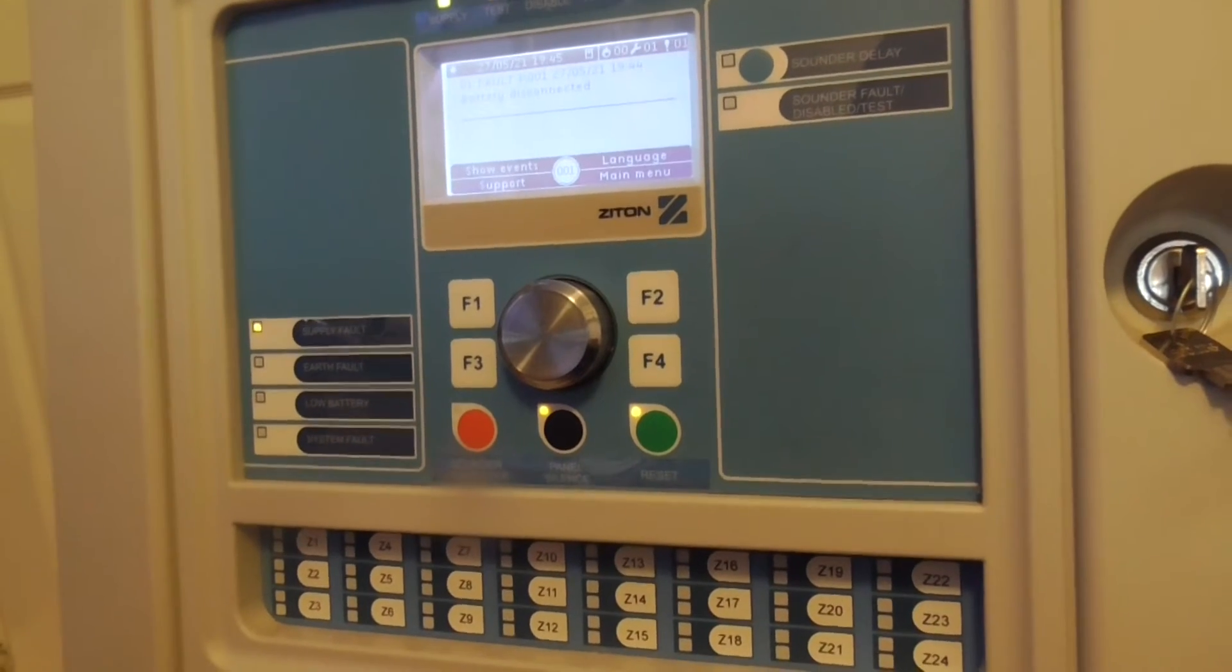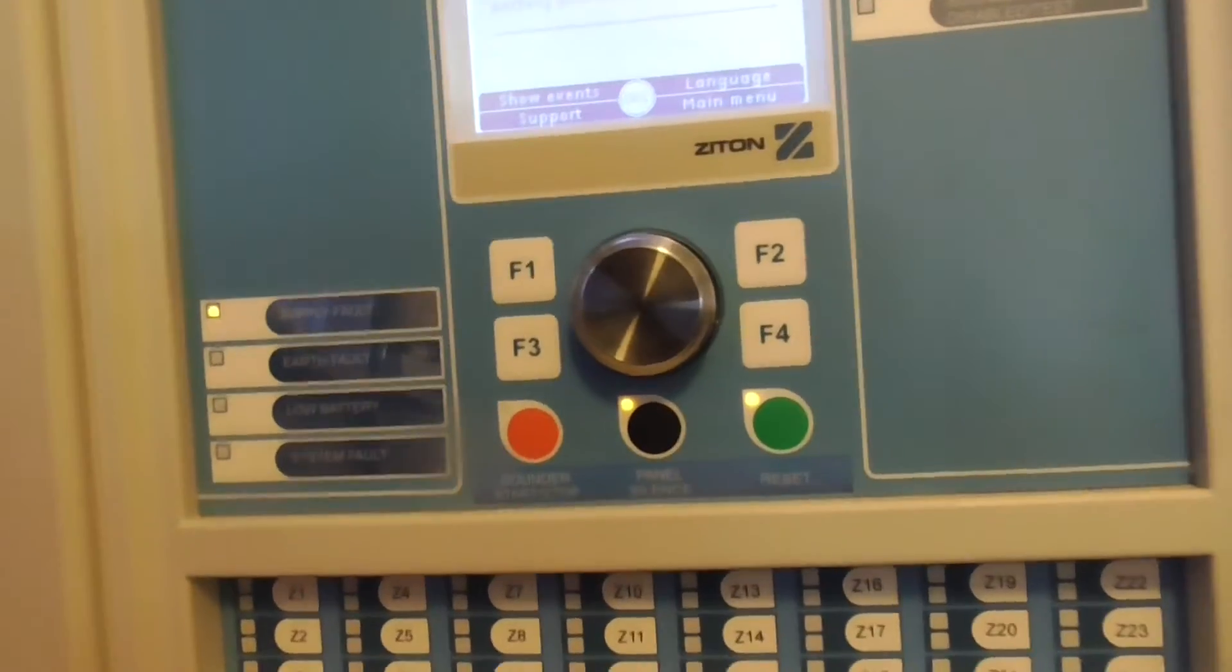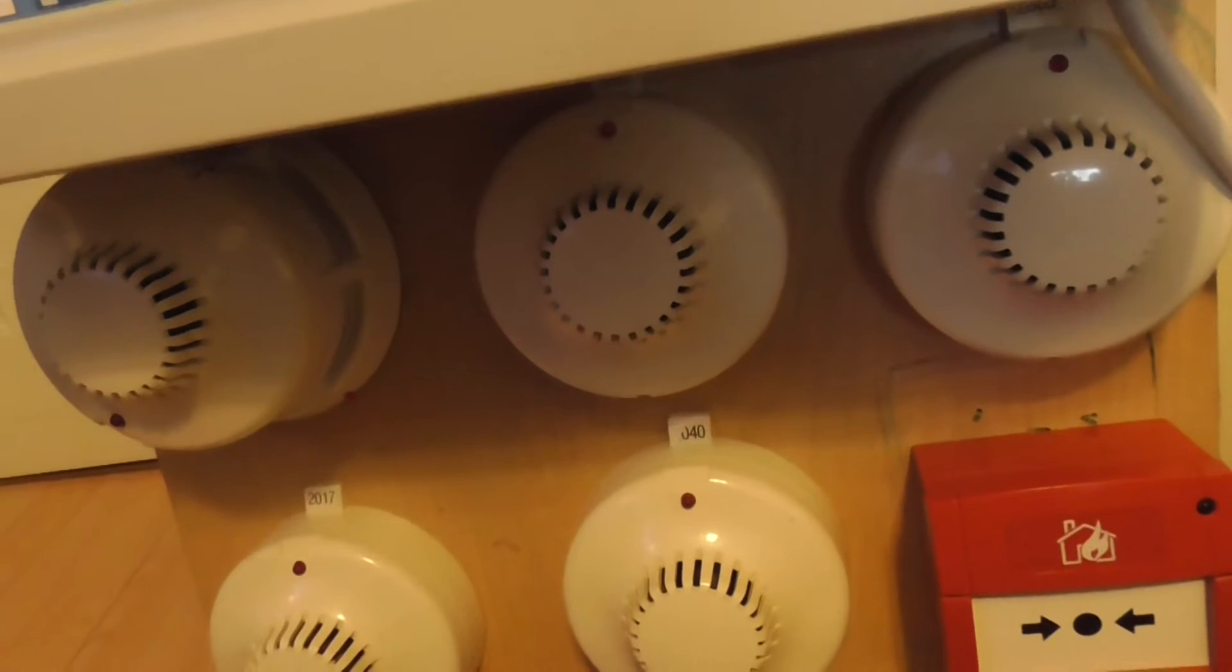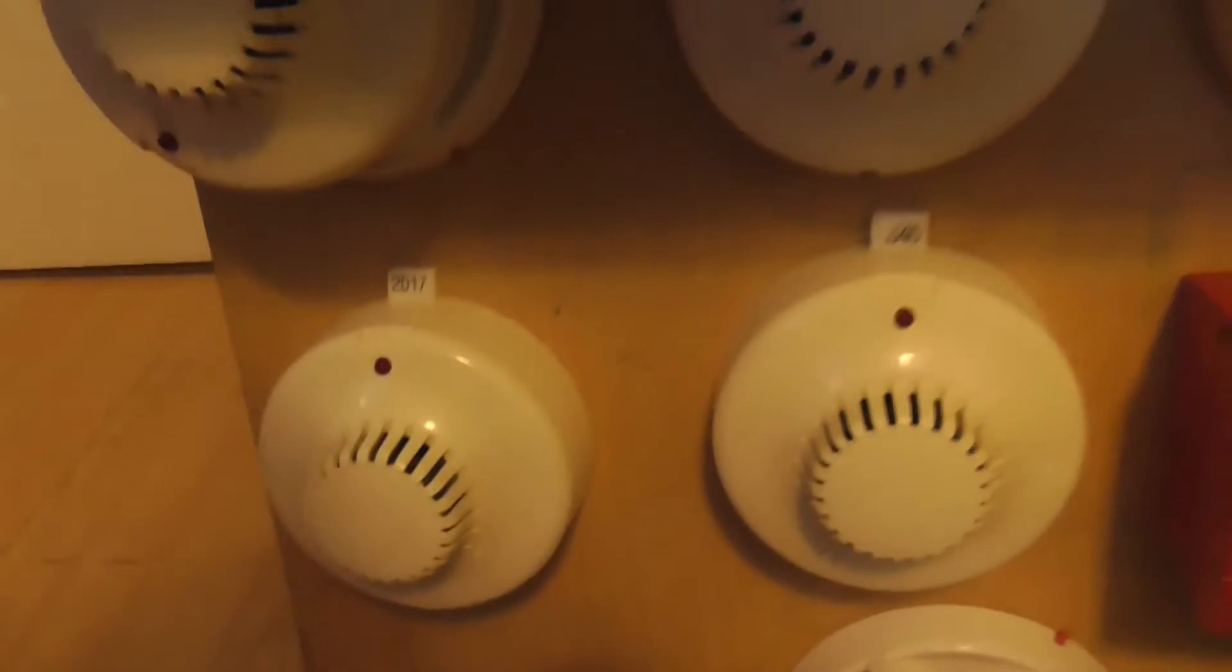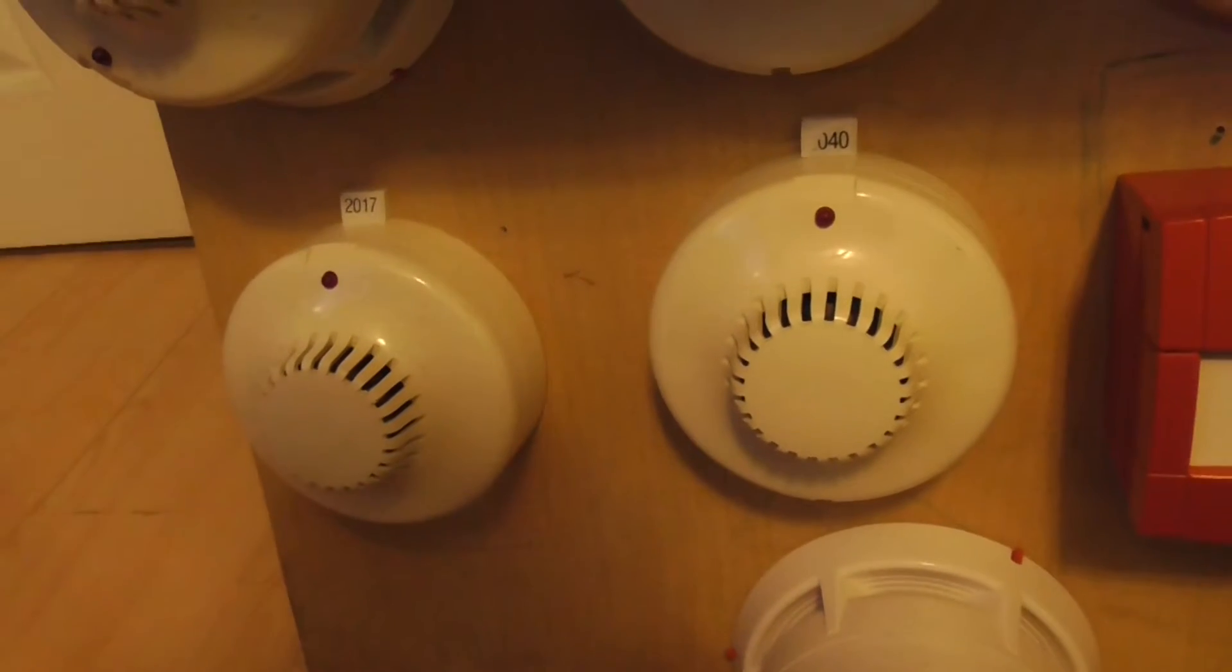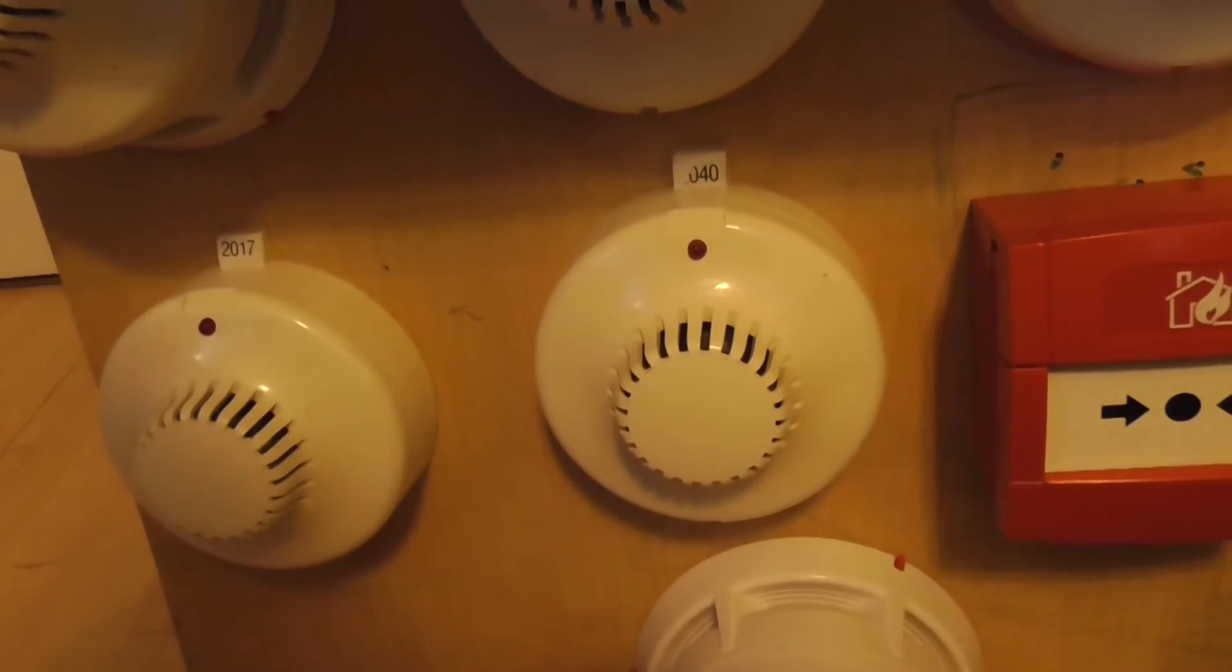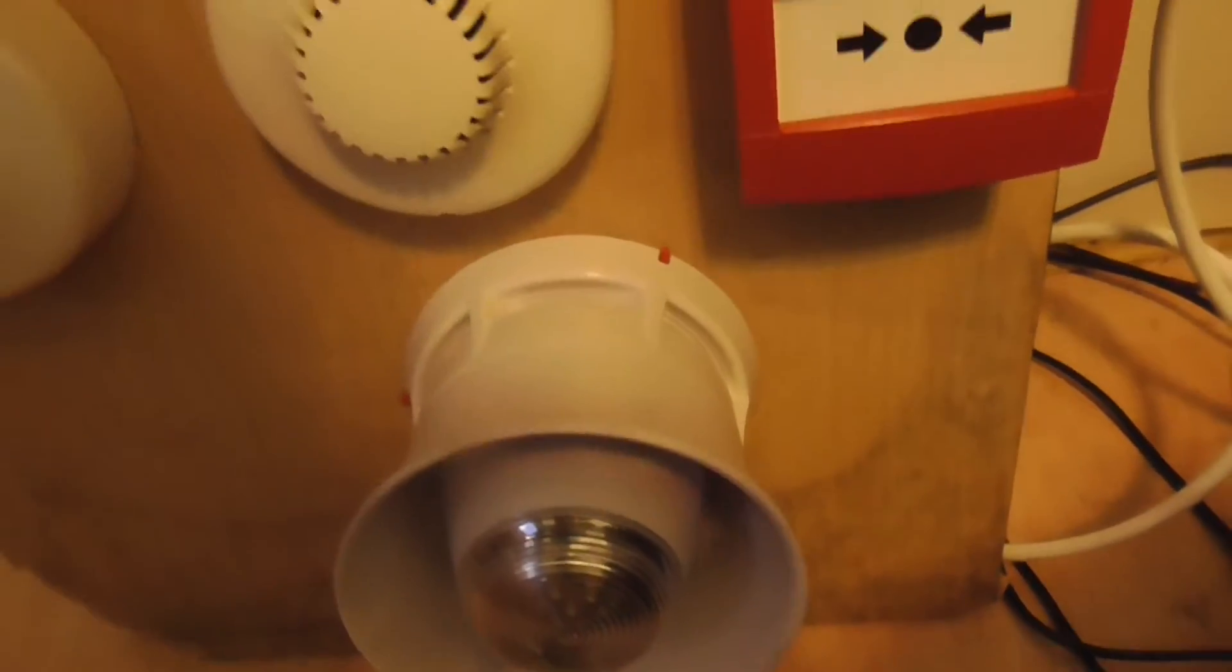I've got this panel quite cheap on eBay for a good price. I've got these fire detectors for a good price. For five of them, there was supposed to be all opticals, but they've given me an ionization one as well. So I've got four opticals that got sent to me and an ionization one. I've got the call point for a good price too on eBay and this sounder as well.